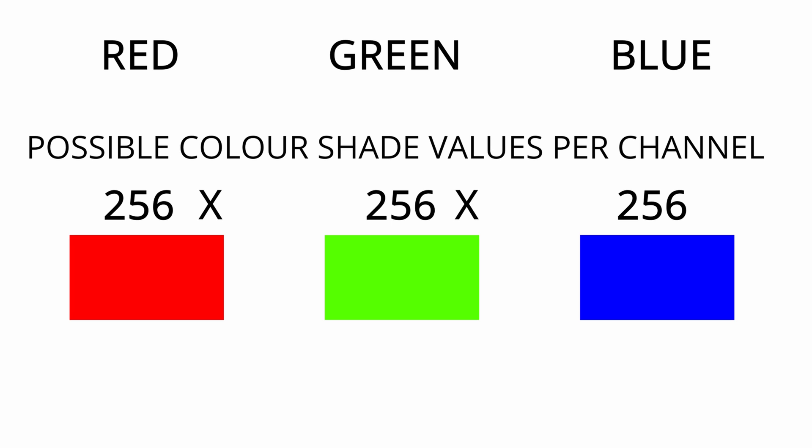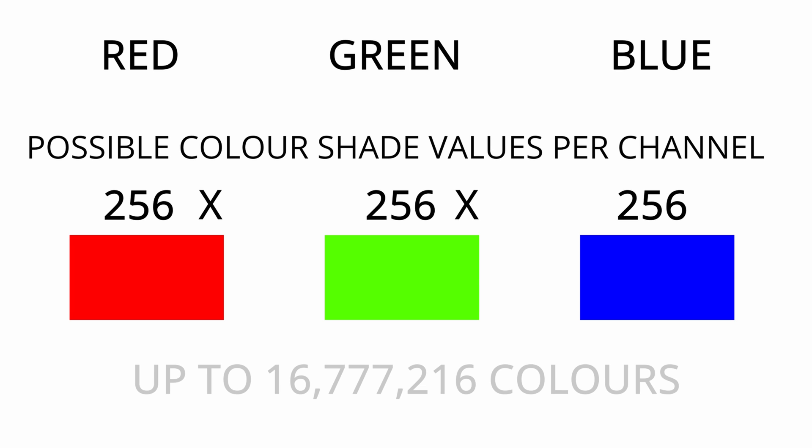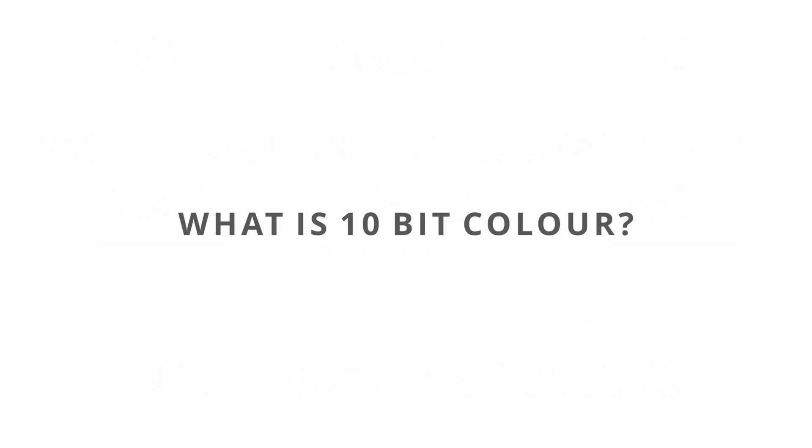When you multiply those by each other that comes to a grand total of 16,777,216 colours. Now that sounds like a lot, and it is, and it's really good for your shots — but when you get to 10-bit colour, this increases so so much.